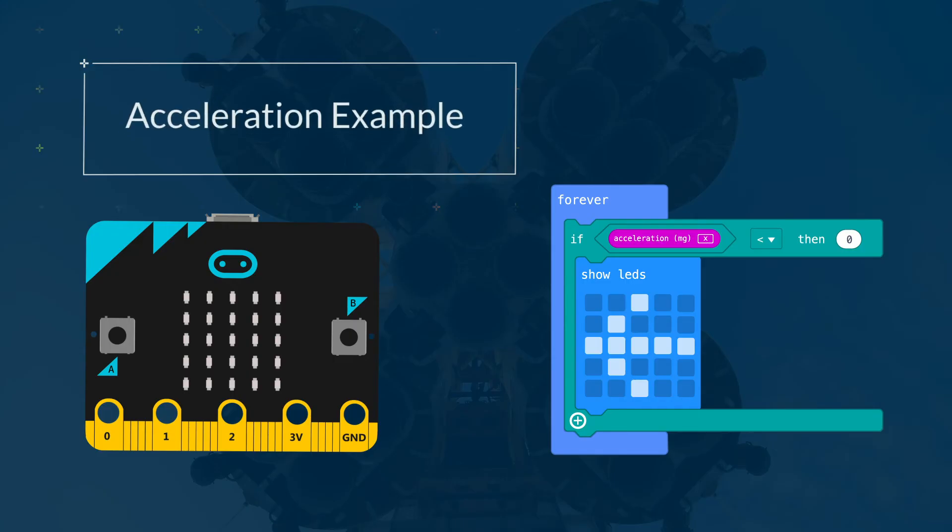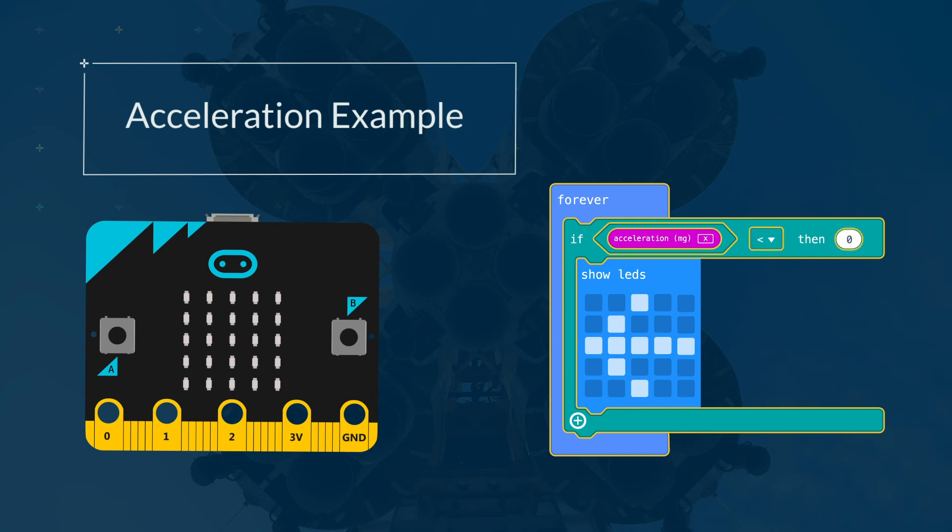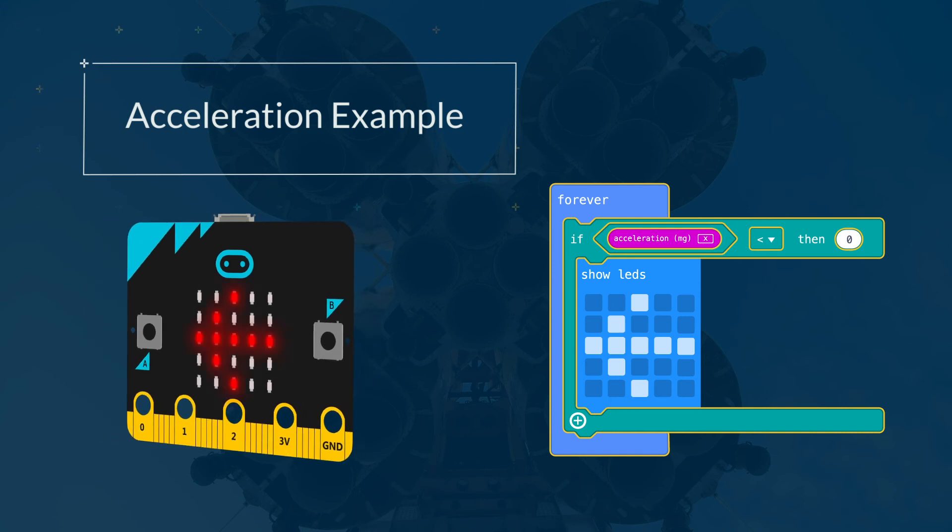This code continually accesses the x-acceleration value. If the value of acceleration is less than zero, then it has been tilted to the left. If this is true, the code displays the left arrow.